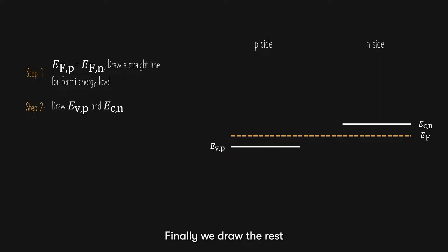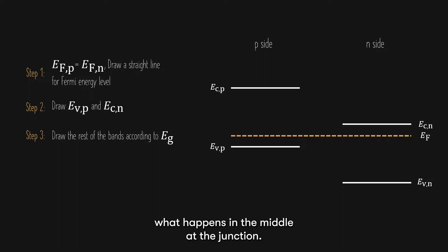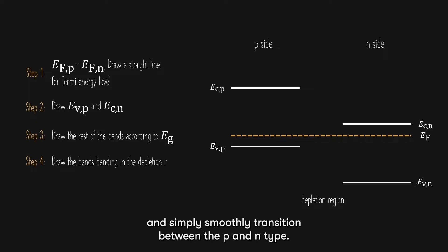Finally, we draw the rest of the bands according to the band gap of the semiconductor. Now, the interesting part is what happens in the middle at the junction. We usually call that the depletion region. At the depletion region, the bands bend and simply smoothly transition between the p- and n-type.